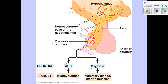The hormones travel down along the length of the axon, and when they get the stimulus they are released into the blood. For ADH, the stimulus would be dehydration. For oxytocin, the stimulus would be birth itself — it causes uterine contractions and the delivery of milk through contraction of the muscles in the mammary glands. Those are the only two hormones that involve the posterior pituitary, and both are not produced there but in the hypothalamus.